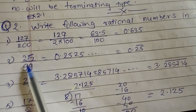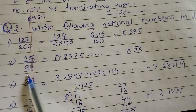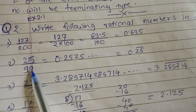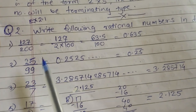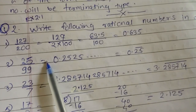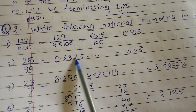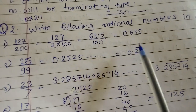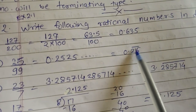The next one is 25 upon 99. When we divide, the answer is 0.2525 recurring. So the answer is written as 0.25 bar.